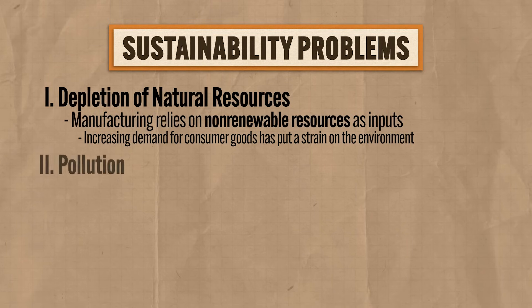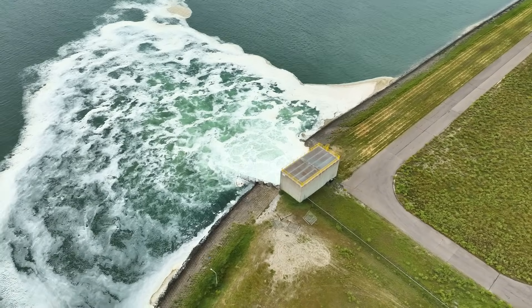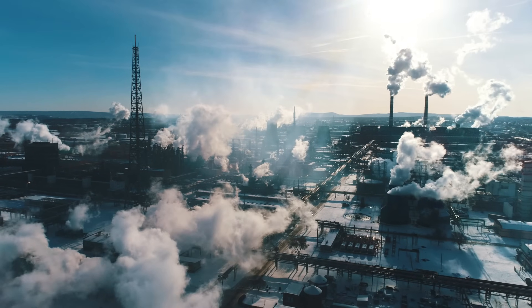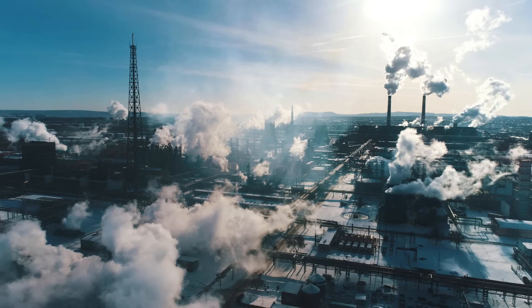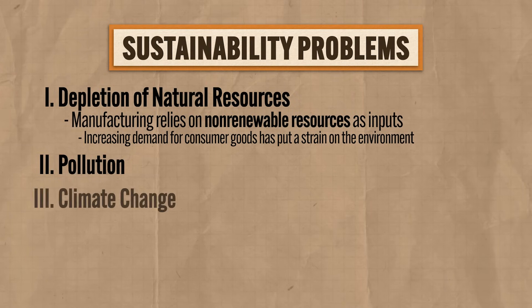The second problem that raises concerns about sustainability is pollution. Factories pollute the environment by the metric buttload, and you know this by now. The byproducts of manufacturing often include chemical-saturated water that is released into the environment and airborne chemicals that are released into the air. And that's just on the local scale. But on a global scale, probably the most significant effect of these practices is a growing concern over climate change.